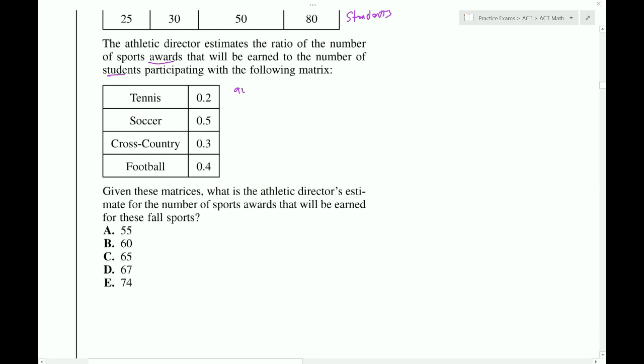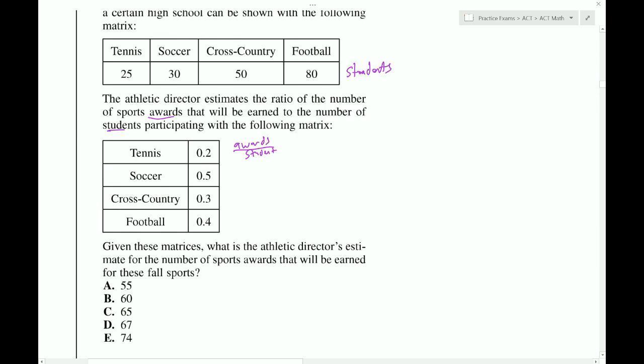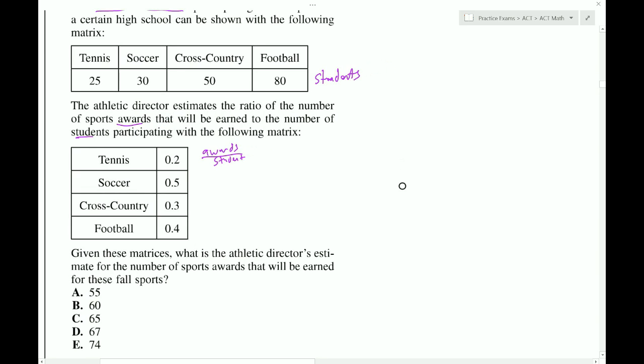This is how many awards there are per student, because the word ratio means divide, and it's always top over bottom. So, awards over students. Now, using the idea of dimensional analysis, we can take the first one from here, which is 25 students, and then we multiply that by 0.2 awards per student. When we multiply them, the student's unit will cancel out.